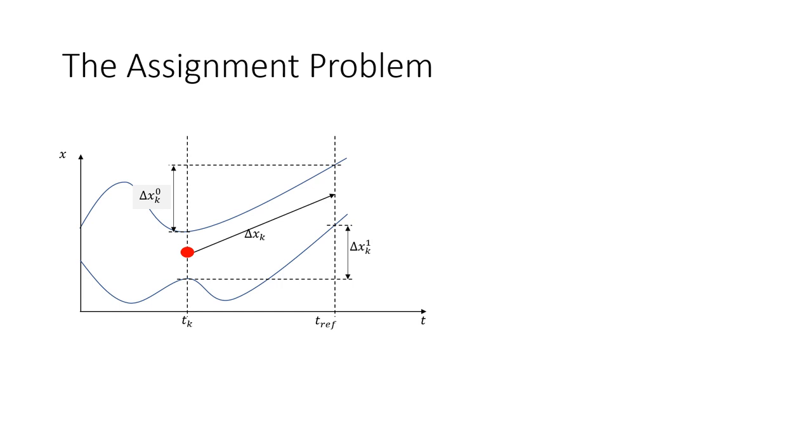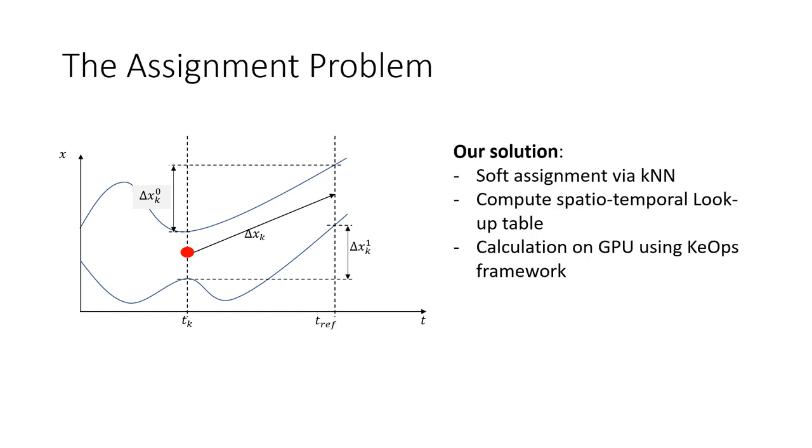You see here a simplified 1D plot of the assignment problem. For each event, here as red circle, we want to derive the displacement from the adjacent trajectories, shown as blue lines. Our solution uses a soft assignment via a k-nearest-neighbor approach.